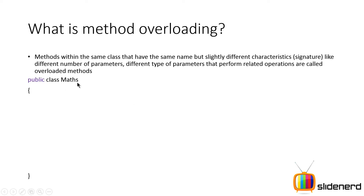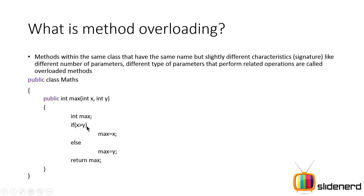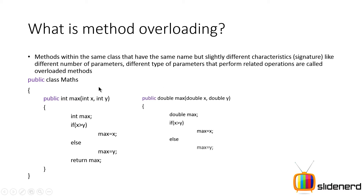Consider a class called Maths. I want to find the bigger of two integers, so I make a method called max(int x, int y). If x is bigger than y, the maximum number is x, otherwise it is y, and we return that maximum. Now what if I want to find the maximum of two numbers that are doubles? That's what overloading deals with — you keep the name the same, 'max', but change the data type: double x, double y, and do the same comparison.